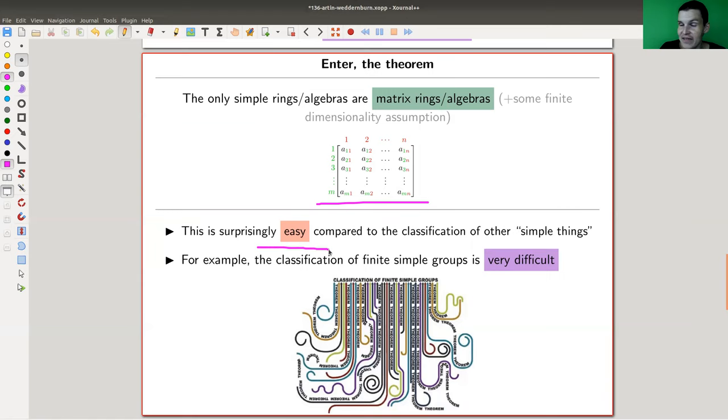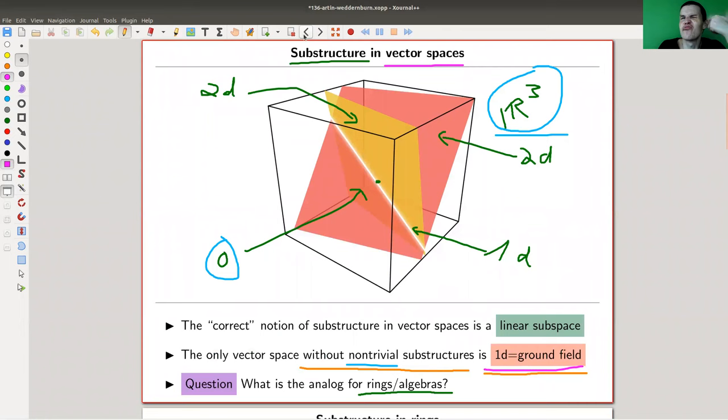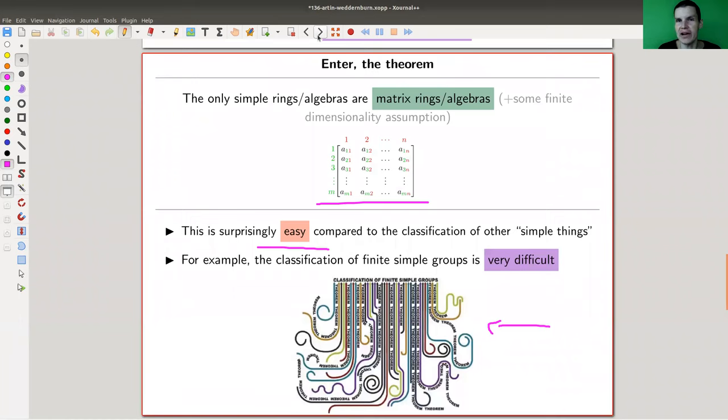It's very easy compared to classification of other simple things that you might have seen. Classification of simple finite groups is this monster of a classification where a lot of strings from very different fields of mathematics come together, and it's really difficult. In most cases, I only showed you a very trivial example, vector spaces, classification is really easy. And in the case of rings, it's still easy, which is very surprising because as soon as you leave this world, essentially hell breaks loose.